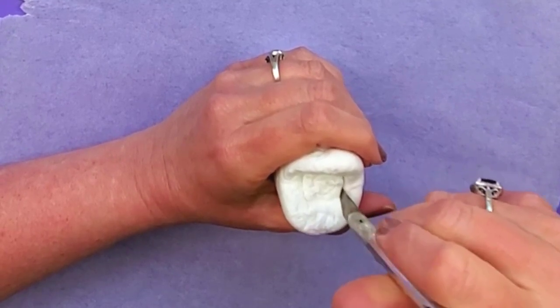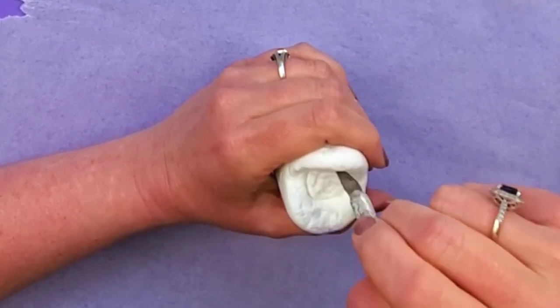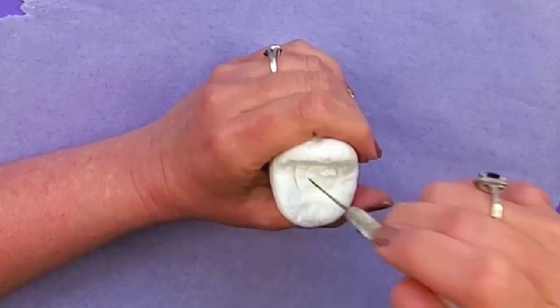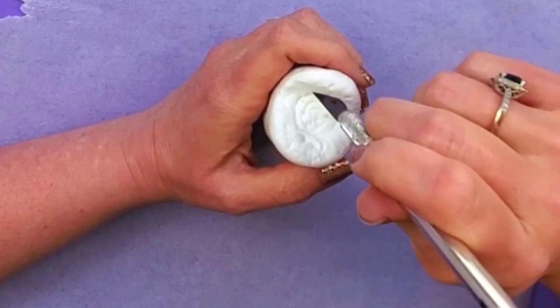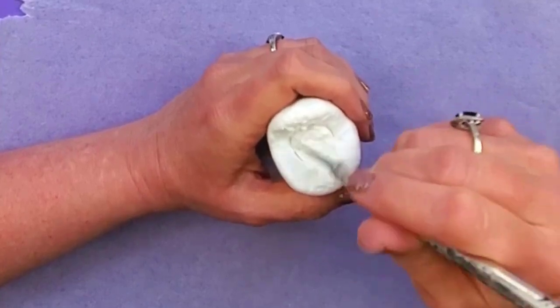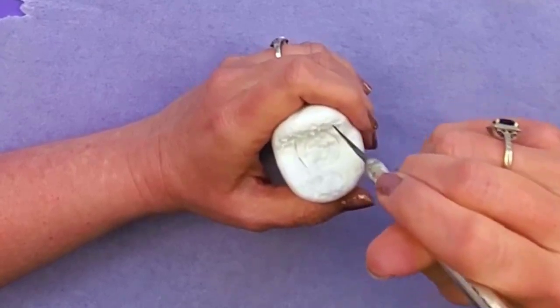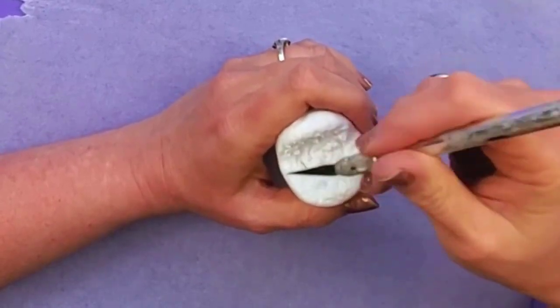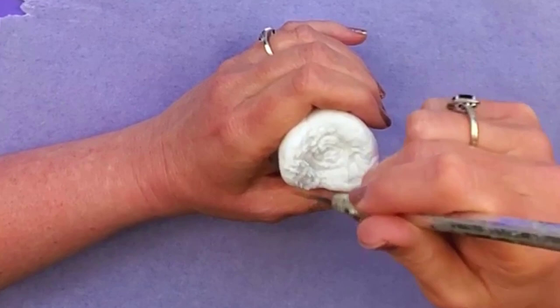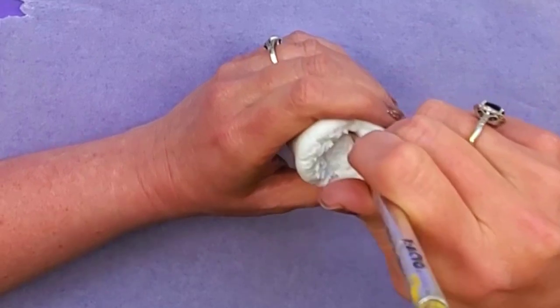You may have to keep going around the circle part just to keep it defined as you're texturing these things. And then for the corn part, we're just gonna pick at this with our exacto knife. You can also do this with a toothpick if you don't have an exacto knife. So just kind of pick, pick, pick until it gets that kind of crumbly looking texture.